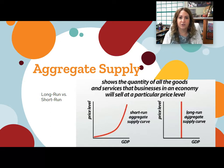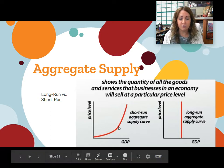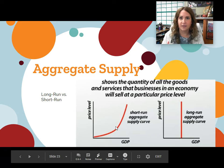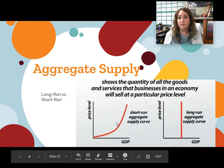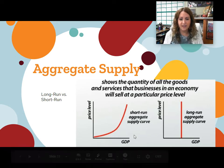You just saw Mr. Clifford go over the short run aggregate supply curve and how it was upward sloping. He might have drawn more of a straight line — you can draw it a little curvy or straight like a 45-degree angle. Either way, they're both correct.